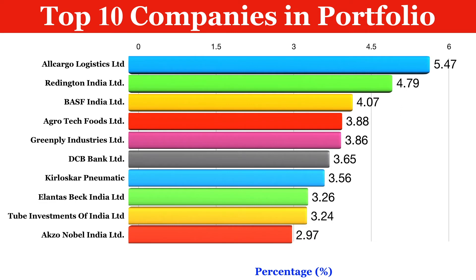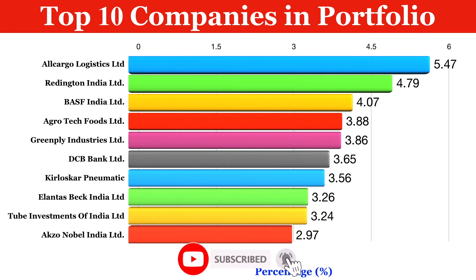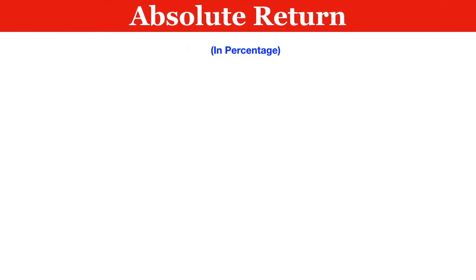Axon Noble India Limited has an allocation of 2.97%. Most of these companies fall under the small cap category. As mentioned, this is a small cap mutual fund which focuses on investing in small cap stocks.